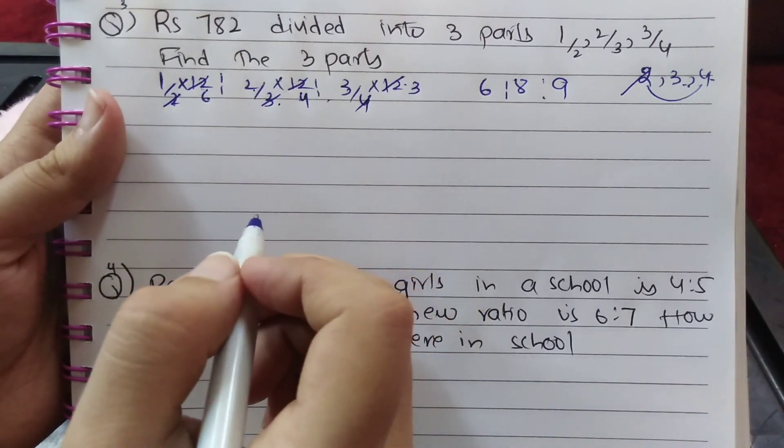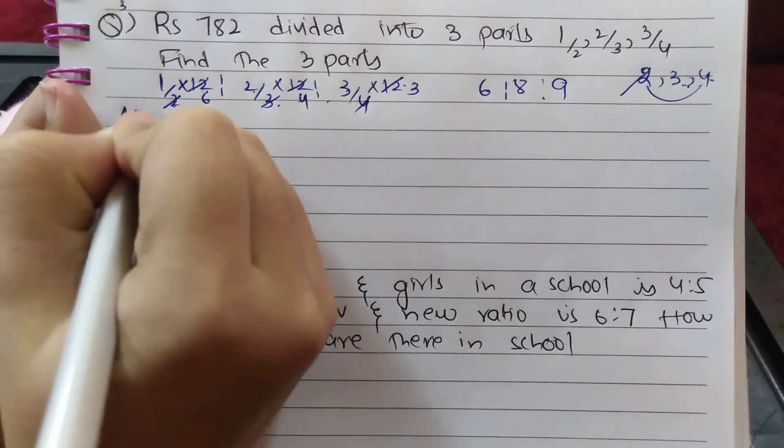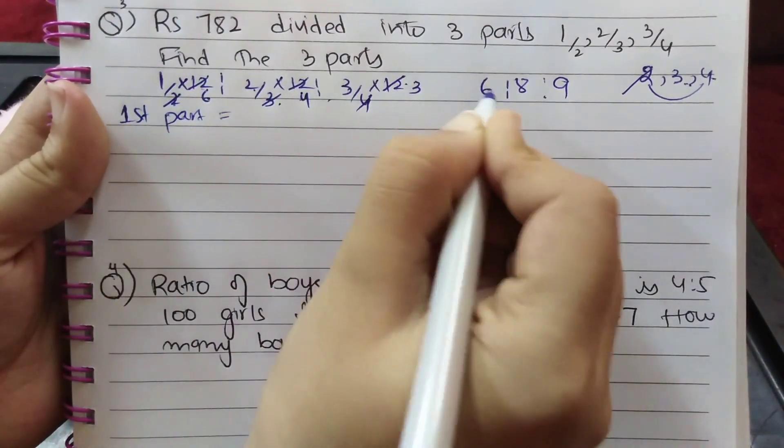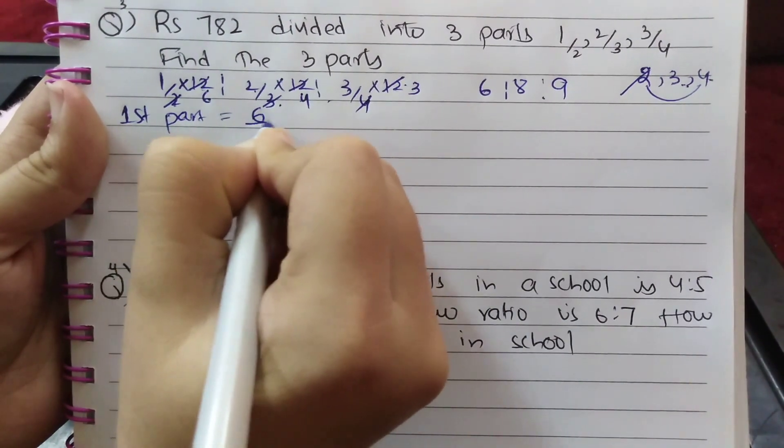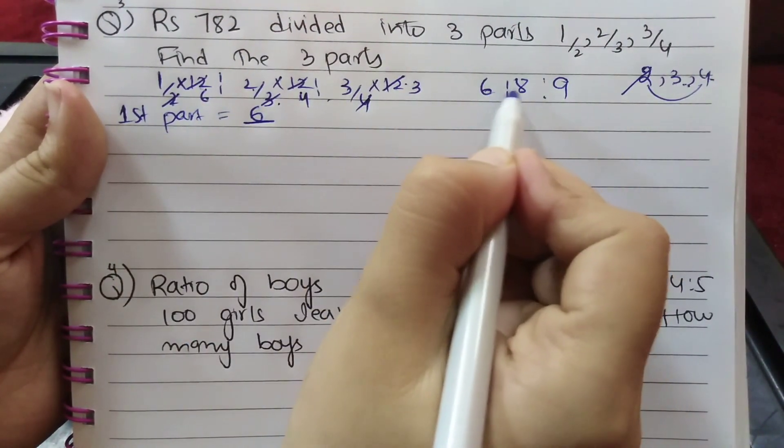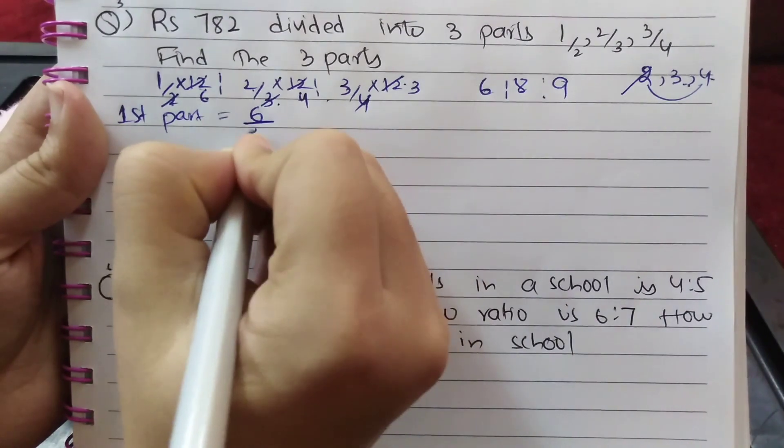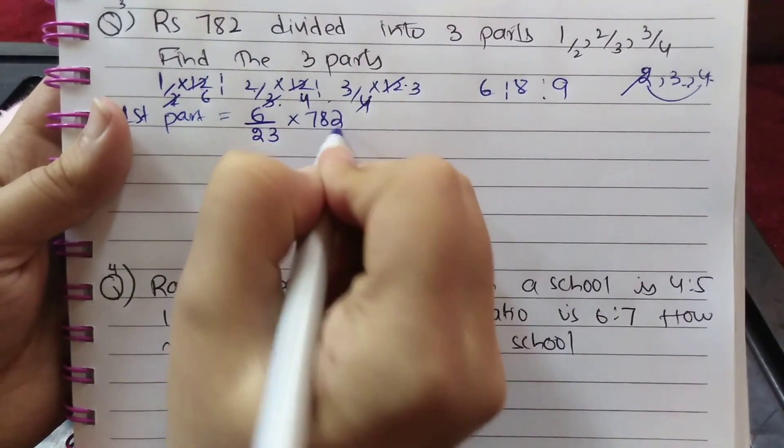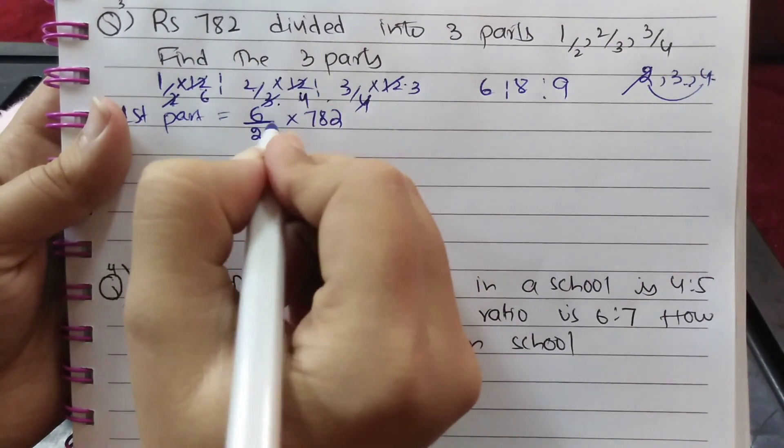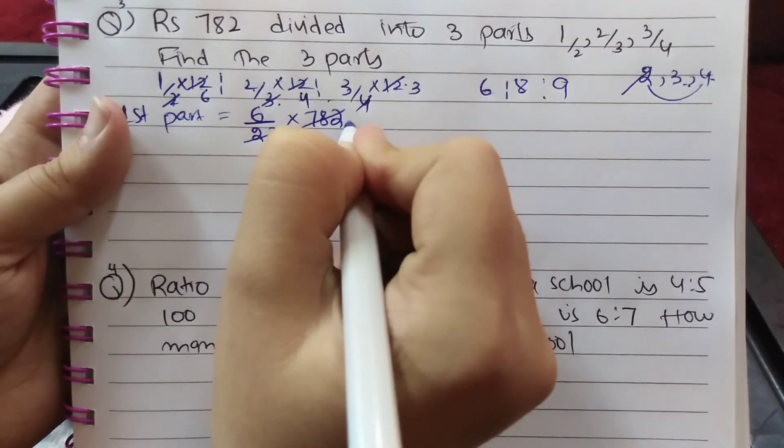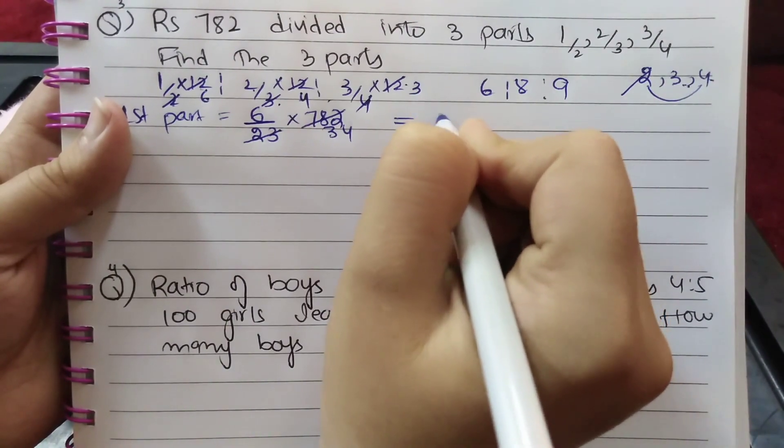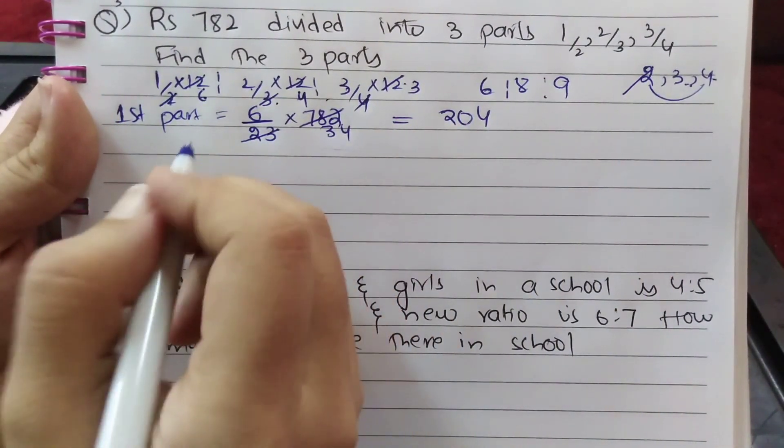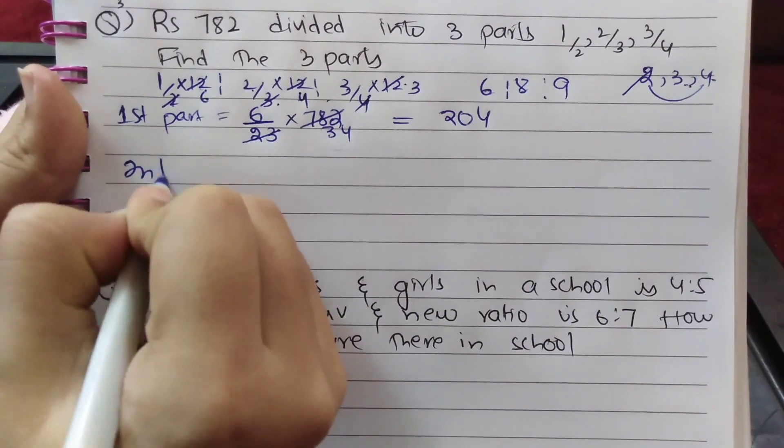To find each part, divide by sum of ratios. 6 + 8 + 9 = 23. Total is Rs 782. 782 ÷ 23 = 34. First part = 6 × 34 = 204. Second part = 8 × 34 = 272.